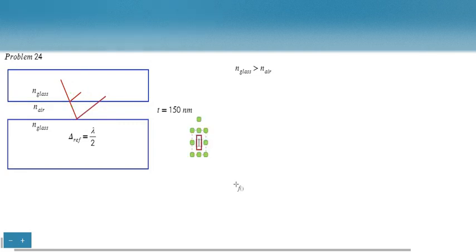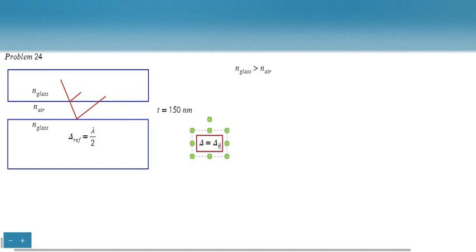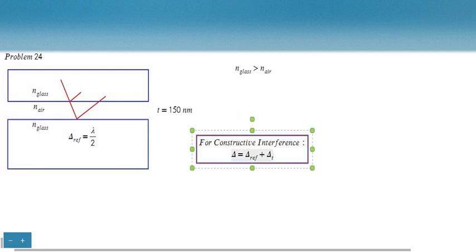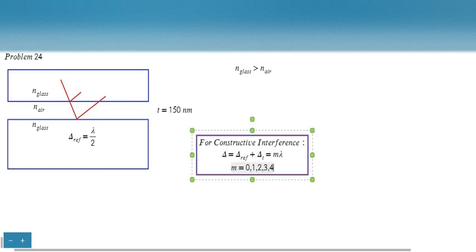The net path length difference, let's call that delta, is going to equal the path length difference associated with the reflection plus the path length difference associated with the light going through that column of air — let's call that delta_T. For constructive interference, the net path length difference must be equal to an integer multiple of wavelength. If the path length difference between these two rays is zero, one lambda, etc., they constructively interfere. So m is equal to 0, 1, 2, 3, 4, etc.